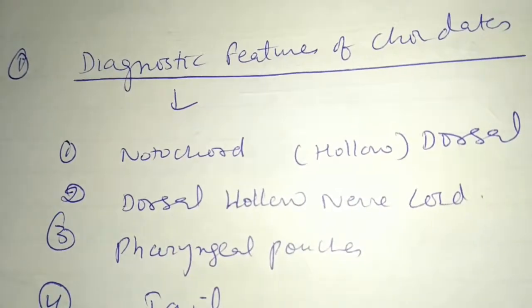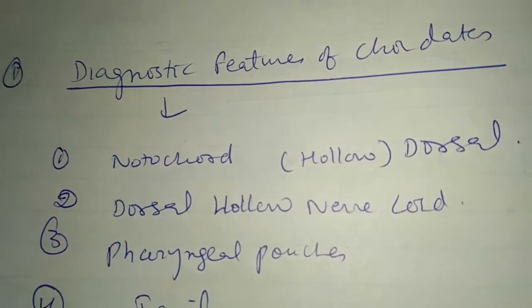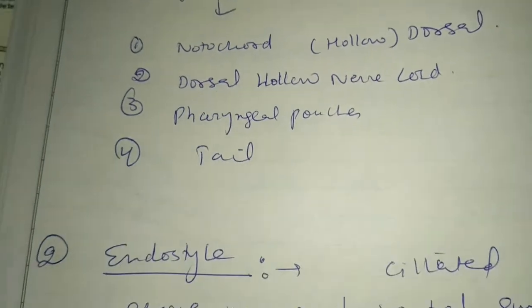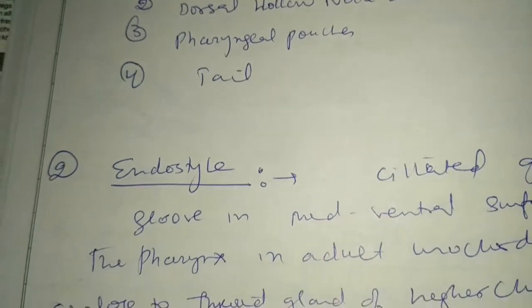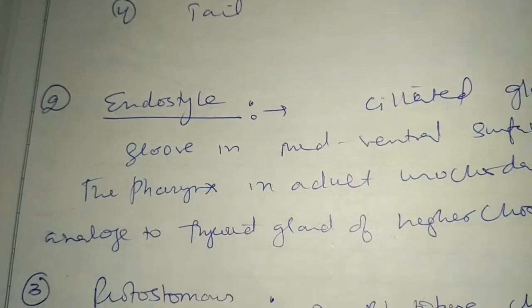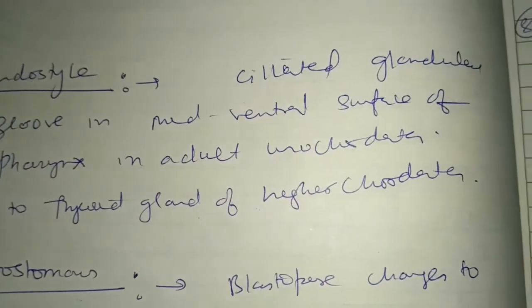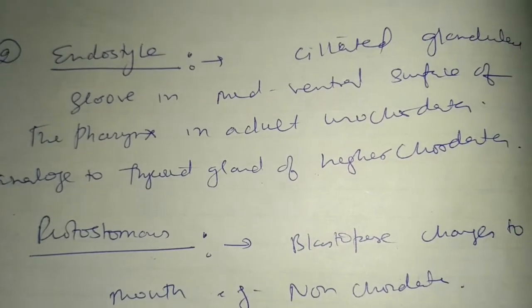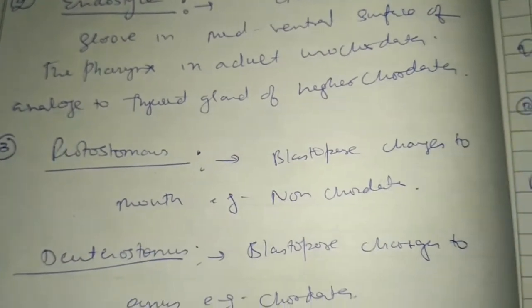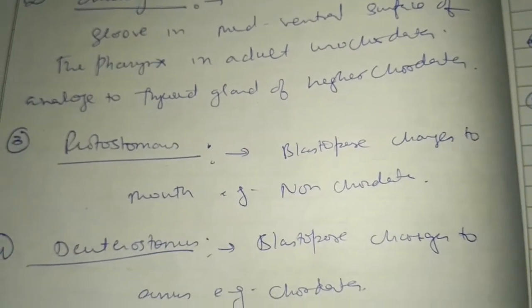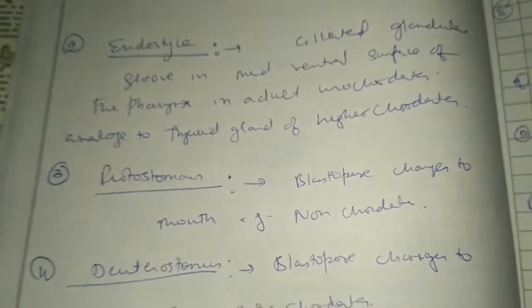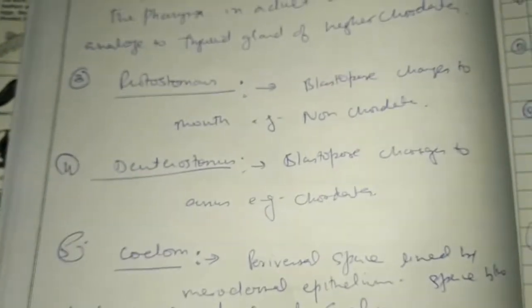First, diagnostic features of chordates. Second, endostyle. Third, protostomes. Then deuterostomes. Next, coelom.